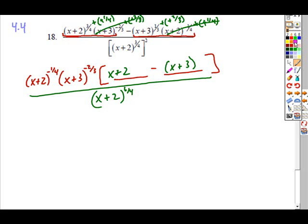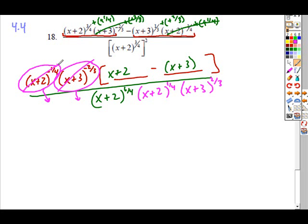My next step then would be to take any negative powers. So both of these factors have negative powers. I'm going to move them to the denominator and change their sign. So I get x plus 2 to the positive 1 fourth. And I get x plus 3 to the positive 2 thirds. So I'm getting rid of my negative powers just by moving them into the denominator of our fraction.